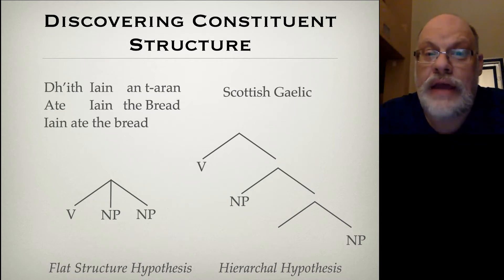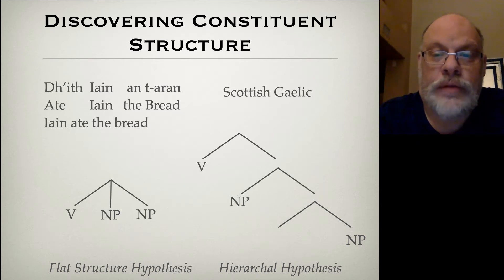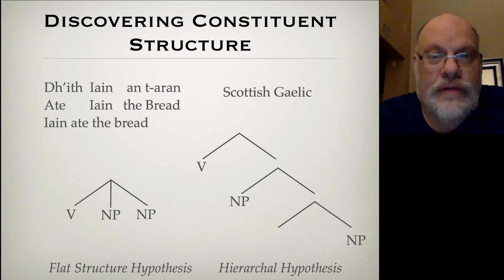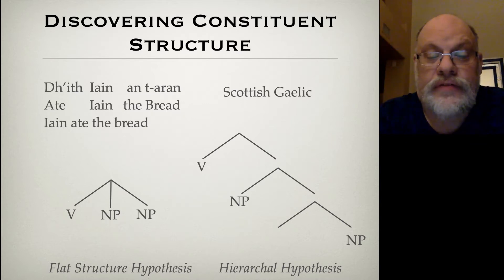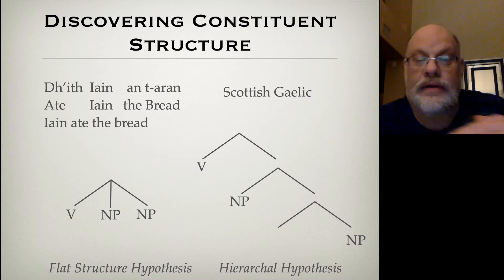The reason people have proposed this is because it's essentially impossible to create a verb phrase that consists of the verb plus the object but excludes the subject when the subject is in the middle of the two. Remember, you can't cross lines. So some people have proposed that the two noun phrases exist as sisters to the verb in these languages, and they just have a very different constituent structure. We're going to call this the flat structure hypothesis because the two noun phrases are on the same level — they're flat with the verb.